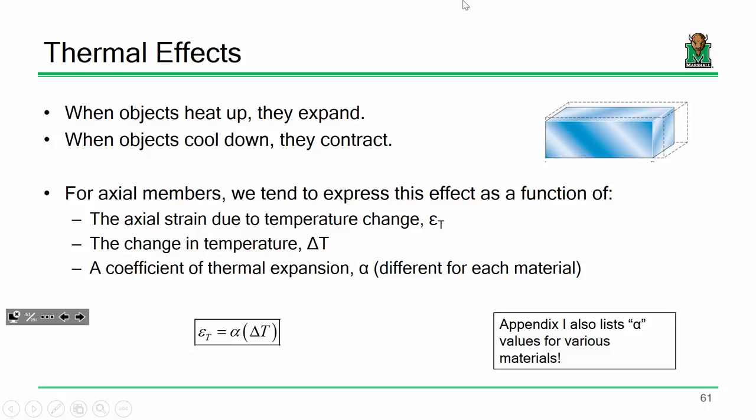If we ignore thermal effects, there are certain properties or constants that define material behavior. For steel, if I apply a load, it responds by deforming. There is a relationship between applied stress and resulting strain in the linear range — we call that Young's Modulus, or the E value. Just like E is a material property, alpha is also a material property. Alpha stands for the coefficient of thermal expansion, and there are different alpha values for steel, copper, brass, and aluminum. They're all listed in appendix I of your textbook.